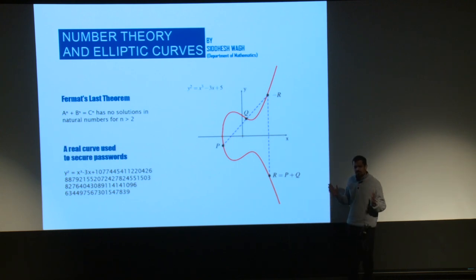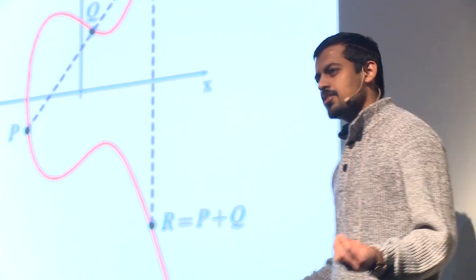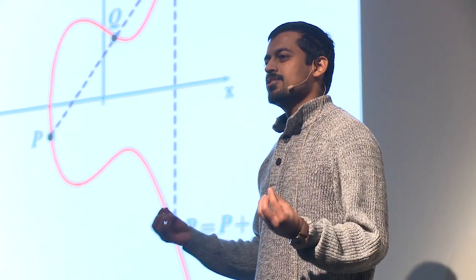These elliptic curves have a really peculiar addition defined on them. If you take two points P and Q in a straight line, their addition is not the third point on the line, but its mirror image. This addition is really crucial for today's cryptography.